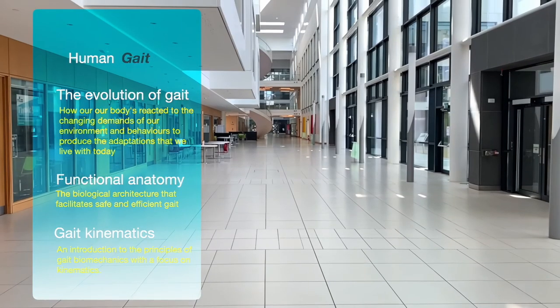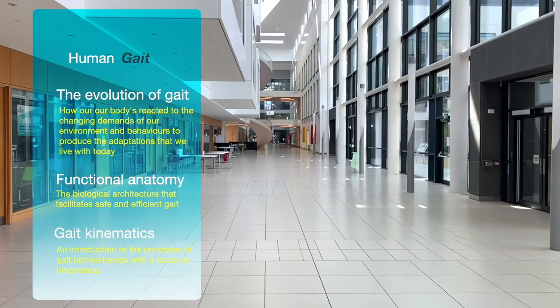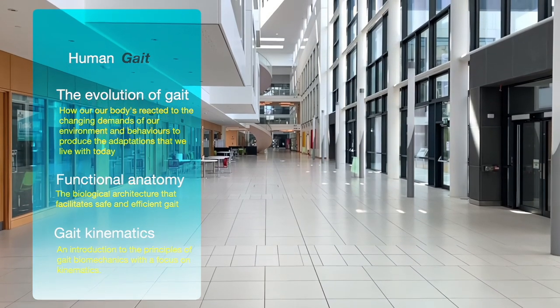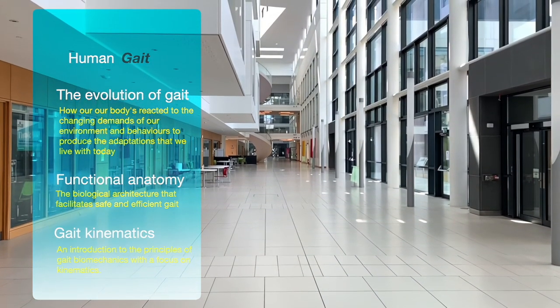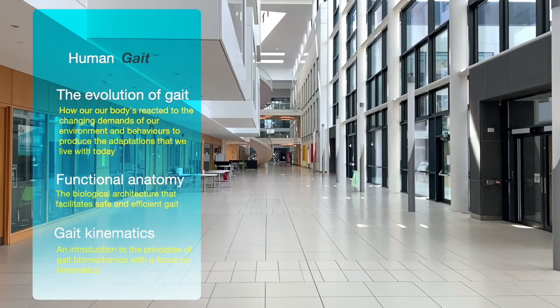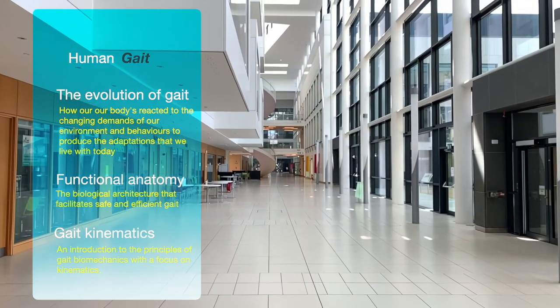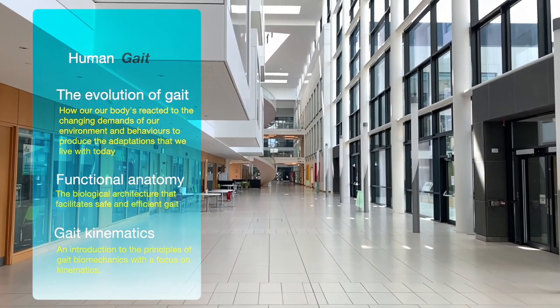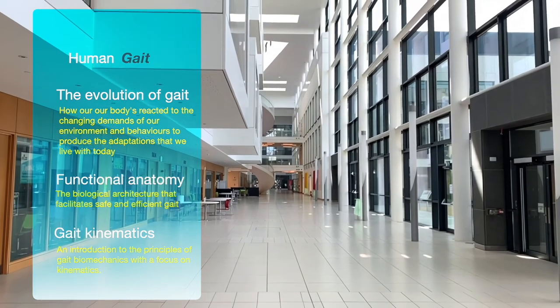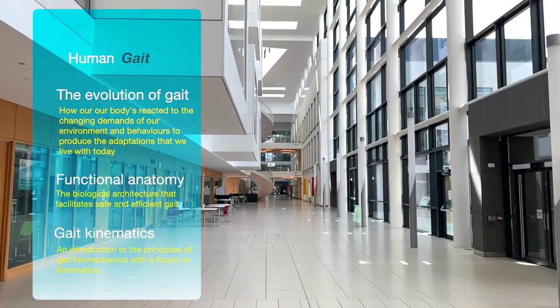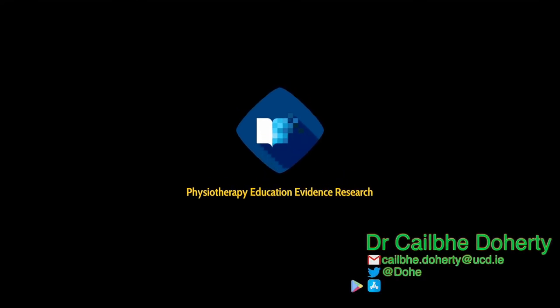In this lecture, we discussed the biomechanics of human bipedalism and gait. We started with the story of how we came to walk and run, then briefly outlined the sub-discipline of biomechanics relating to joint kinematics. We concluded by reviewing our functional anatomy and its relevance to human gait. This lecture was prepared for students in the UCD School of Public Health, Physiotherapy and Sports Science.